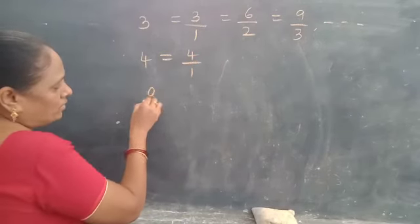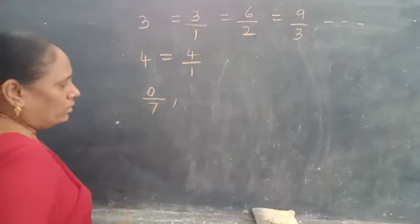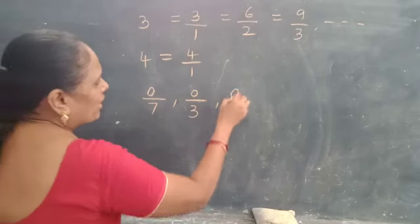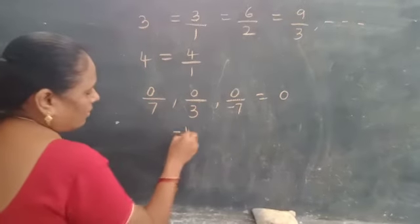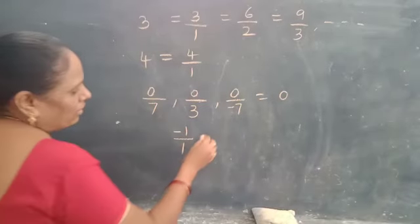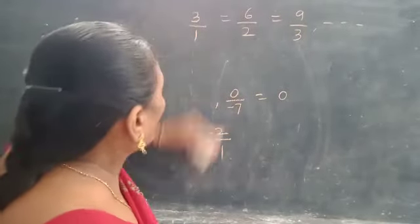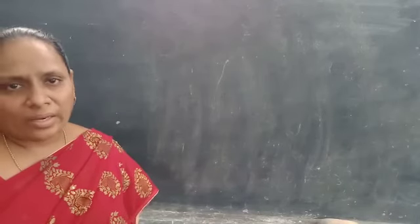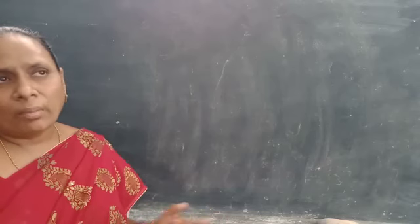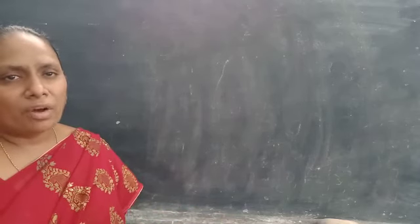Next, how do we write whole numbers? Whole number 0 — other than 0, all are natural numbers. So 0 can be written as a rational number by dividing any number: 0 by 3, or 0 by minus 7, which equals 0. And for integers, minus 1 can be written as minus 1 by 1, minus 2 as minus 2 by 1, and so on. Therefore, we conclude that all natural numbers, whole numbers, and integers can be written in the form of rational numbers by writing 1 as the denominator. But we cannot convert rational numbers back into natural numbers, whole numbers, or integers.